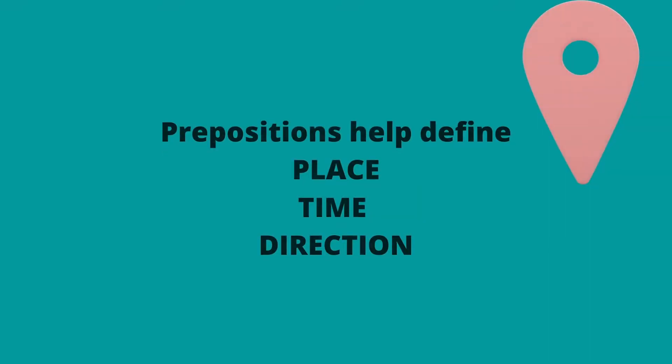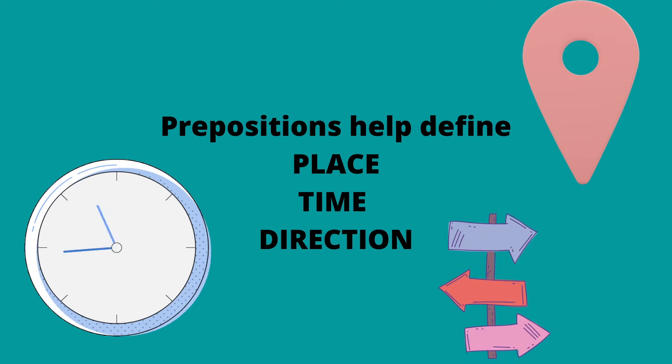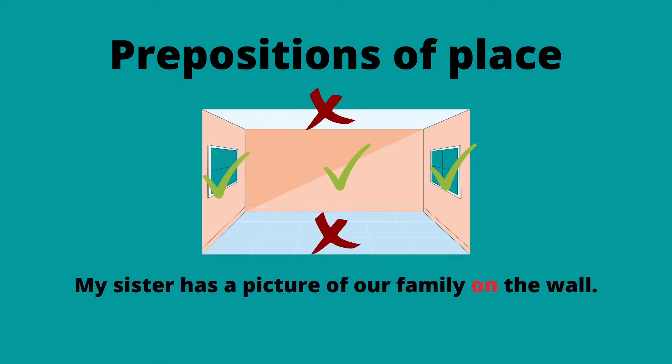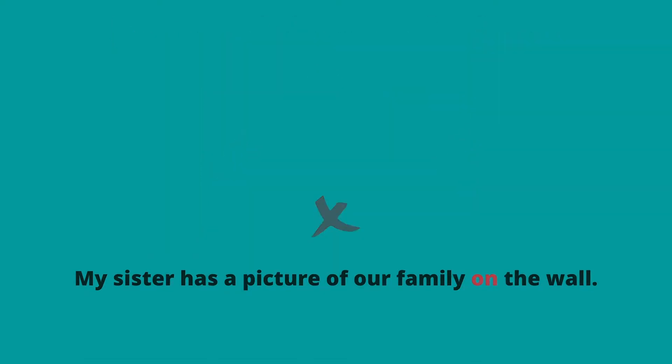Let's break this down because no one wants abstract grammar explanations. Prepositions help to better define a place, time, or direction. For example, let's think of an everyday situation: your sister has a picture of your family hanging on the wall. But the phrase 'on the wall' does not specify which wall. By the way, 'on' is already a preposition.